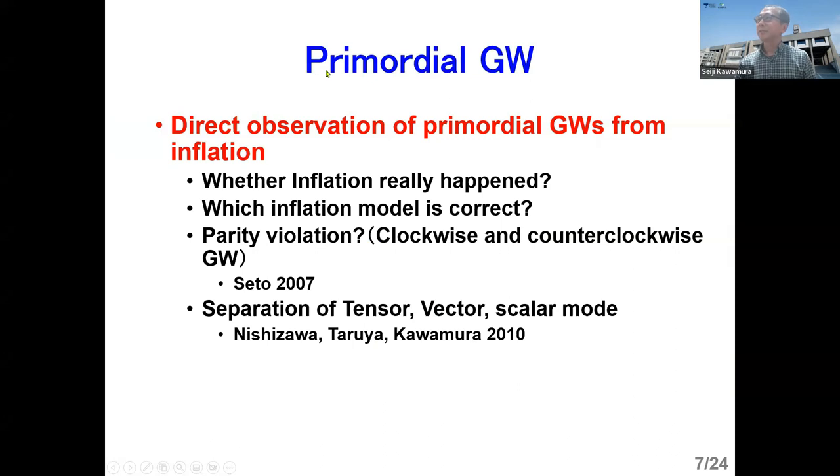So let me start with the primordial gravitational waves. So this is direct observation of primordial gravitational waves from inflation. It's very important to tell whether inflation really happened, which inflation model is correct. And also parity violation. This means that if, as I mentioned, we put two clusters at the same place. But if we put two clusters with some distance, we can distinguish clockwise and counterclockwise gravitational waves. So we can have some information about the parity violation. And also we can do some separation of tensor vector scalar mode things.